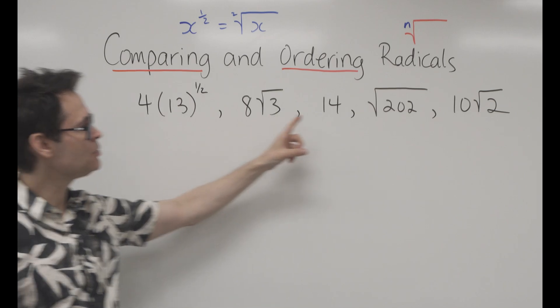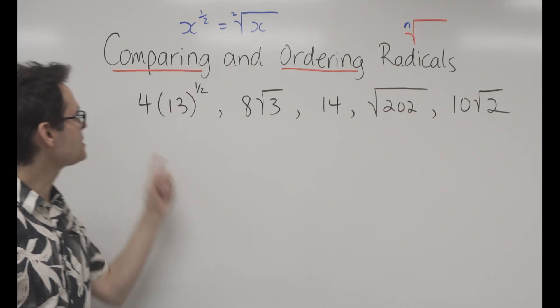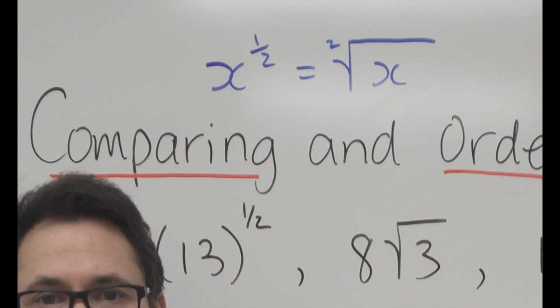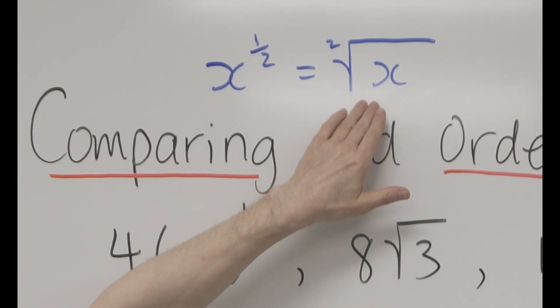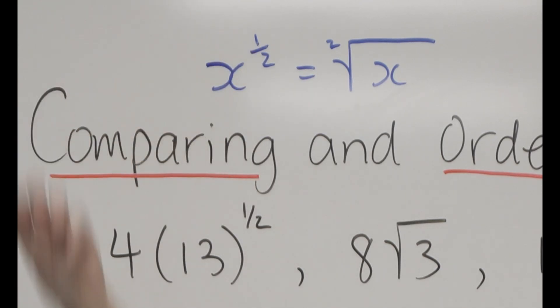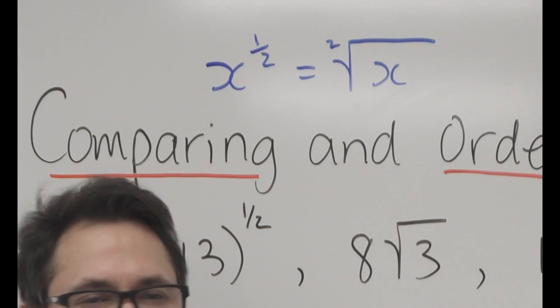If you look at these five numbers, they all look really different in different ways. This first one I threw in because some teachers are going to introduce you to rational exponents. You'll learn eventually that the square root is the same as a number to the 1 over 2, and if it was the cube root, it would be the number to the 1 over 3. I'm just throwing this in in case your teacher is doing that for you.